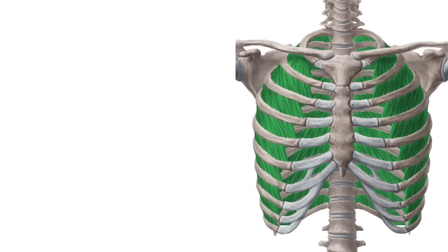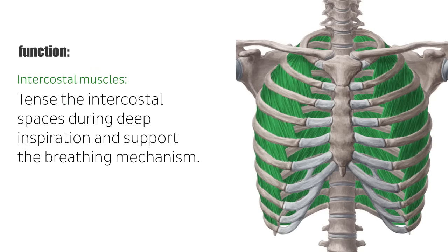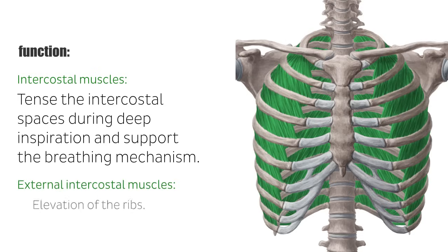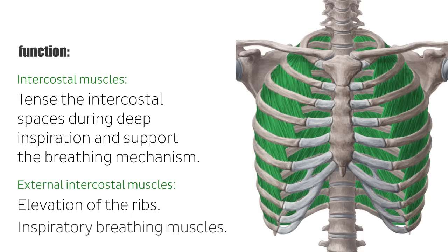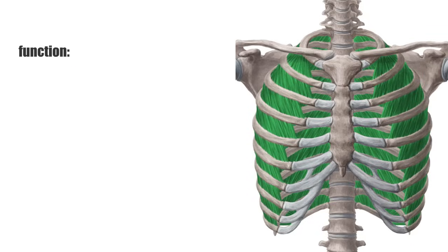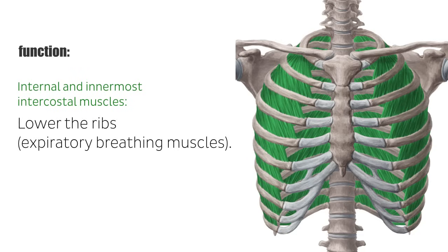The task of the intercostal muscles is to tense the intercostal spaces during deep inspiration and support the breathing mechanism. The contraction of the external intercostal muscles causes an elevation of the ribs, functioning as inspiratory breathing muscles, whereas both the internal and innermost intercostal muscles lower the ribs, functioning as expiratory breathing muscles.